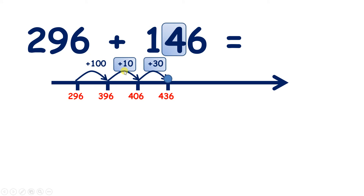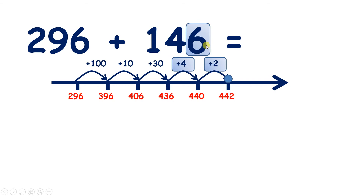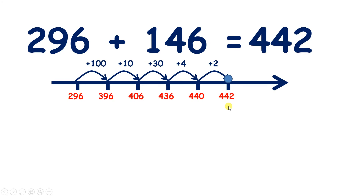So we added ten, then added thirty, which is easier than adding forty all in one go. Now we need to add six units. We're on four hundred and thirty-six, so how many more units do we need to get to four hundred and forty? We need four more units to get to four hundred and forty, and then we can add two more units, so that we've added six units altogether. That gives us our answer: four hundred and forty-two.